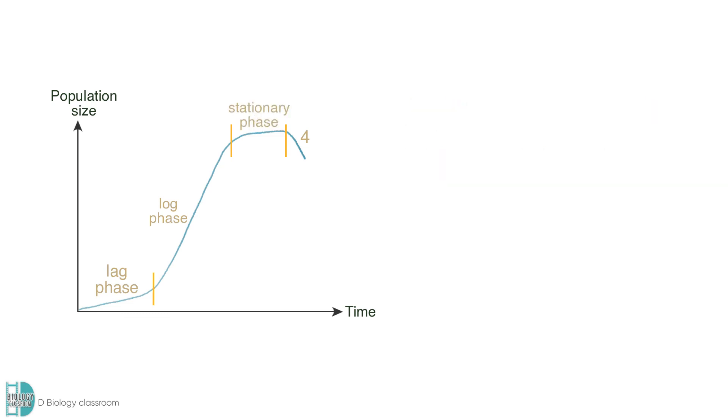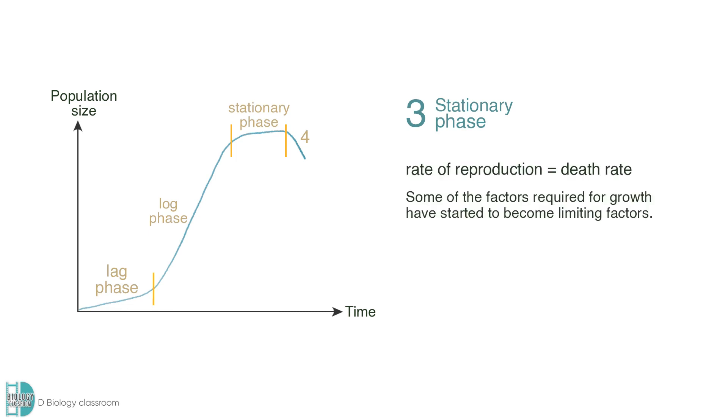A stationary phase can sometimes be seen as well. This is when the rate of reproduction is equal to the death rate. Some of the factors required for growth have started to become limiting factors.